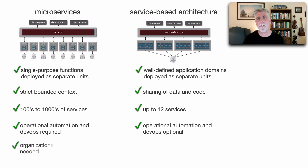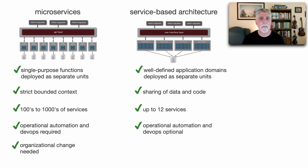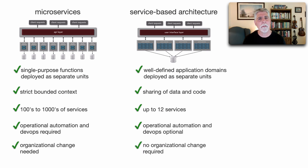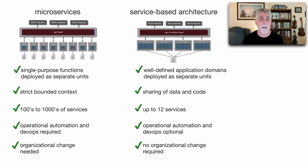One last structural difference is that microservices usually requires organizational change into cross-functional teams with specialization, where testers and DBAs are all on the same virtual team usually aligned by domain. But service-based architecture works fine with Conway's law — in other words, we don't need to reorganize our teams in order to embrace this architecture style.